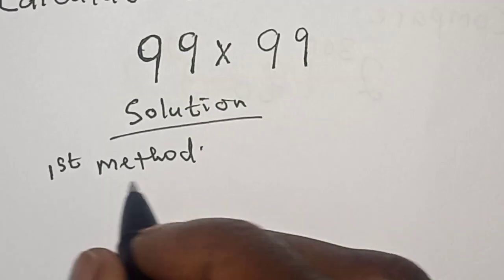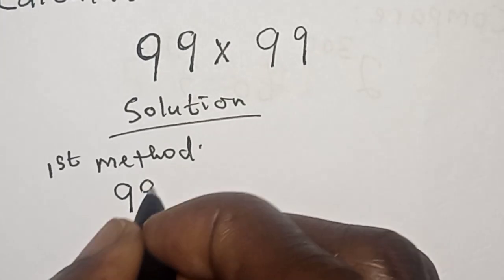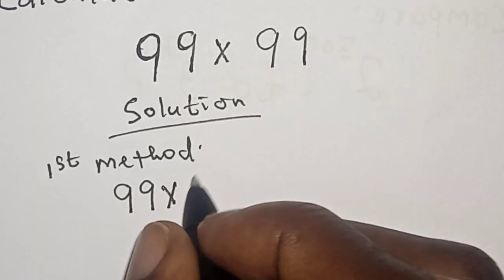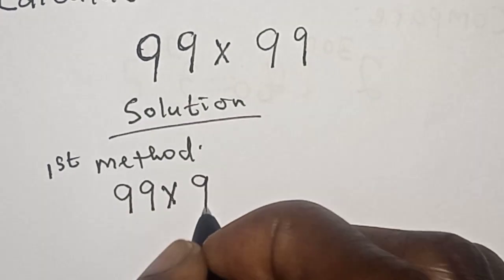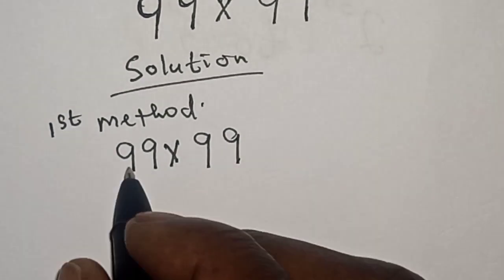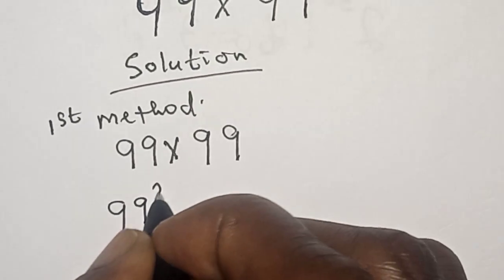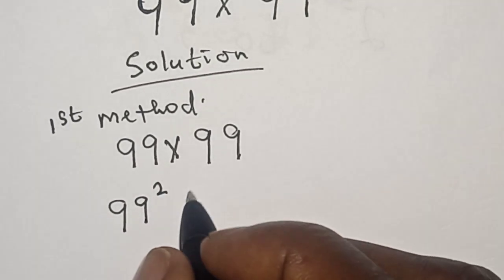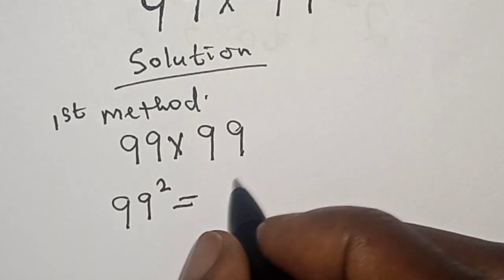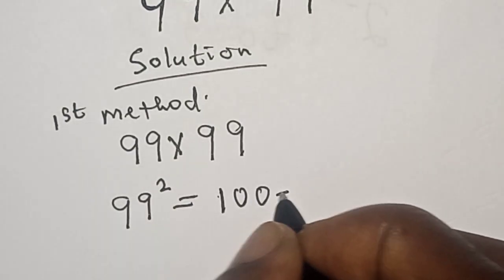We have the given question: 99 multiplied by 99. Then this is 99 square, which is equal to (100 - 1) square.